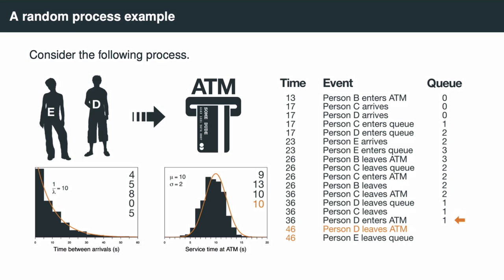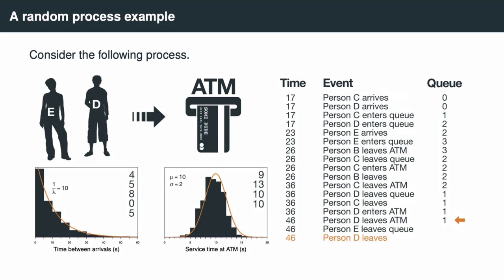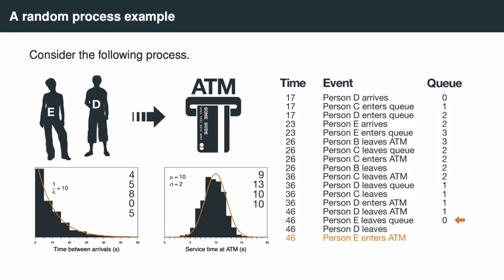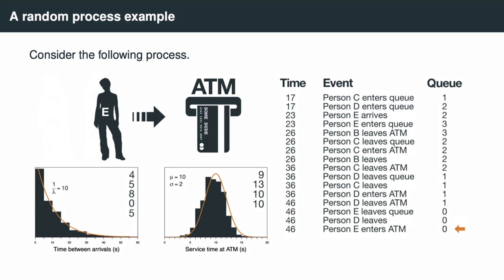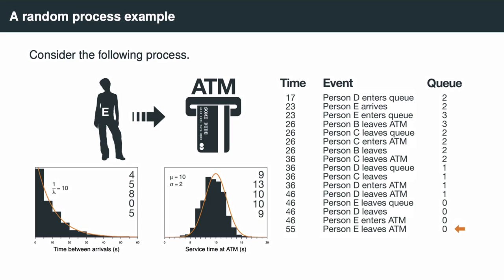Person D enters the ATM at time 36, triggering another draw from the normal distribution — let's say 10 seconds again — meaning Person D will leave the ATM at time 46. The simulation moves on until Person D leaves the ATM, triggering the event that Person D will leave the system. The simulation then moves to Person E leaving the queue, which is also when Person E enters the ATM. This triggers the next draw from the normal distribution, so we know when Person E will leave the ATM.